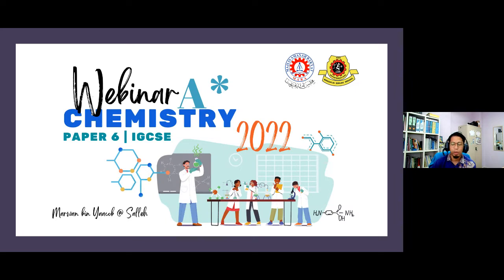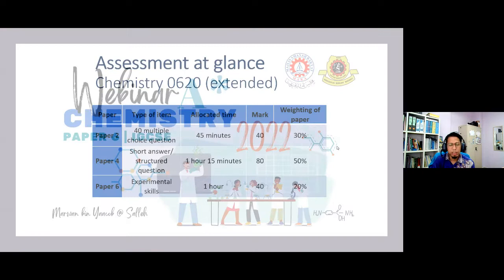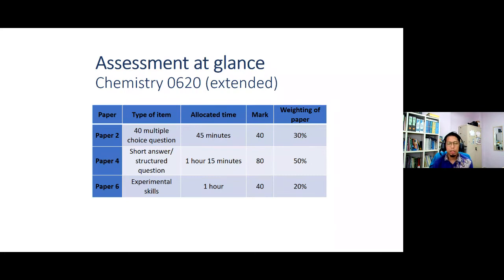Jadi untuk Paper 6, sebelum kita pergi dengan lebih lanjut, kita imbas kembali tentang pentaksiran yang akan diduduki oleh pelajar-pelajar MRSM. Semua pelajar MRSM akan mengambil kertas 2, 4 dan 6 — sama ada pelajar menduduki peperiksaan IGCSE atau hanya peperiksaan MRSM, semua pelajar akan menduduki peperiksaan bagi kertas 2, 4 dan 6.